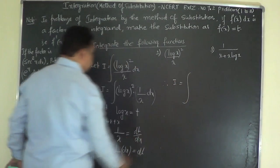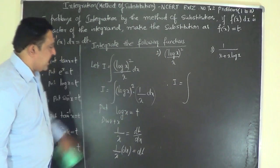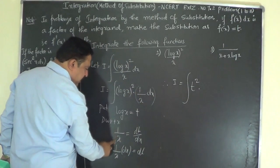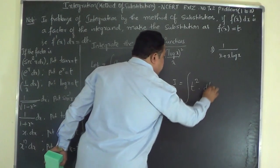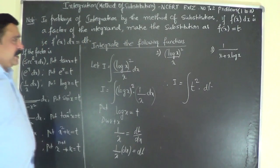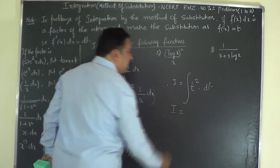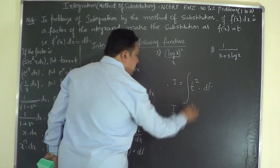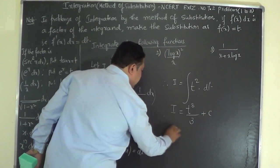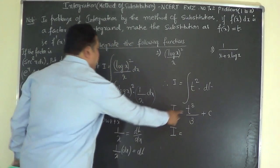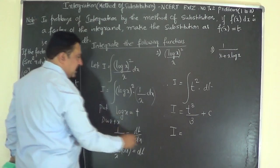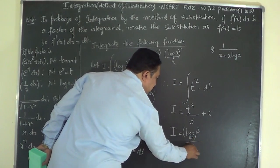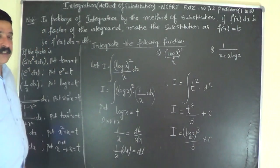Therefore I = ∫ t² · dt (since log x = t makes (log x)² = t², and 1/x dx is replaced by dt). Applying the power rule: I = t³/3 + C. Now substitute back t = log x. So I = (log x)³ / 3 + C. That is the answer to the second problem.